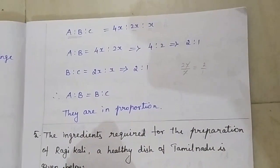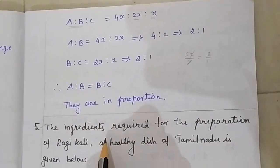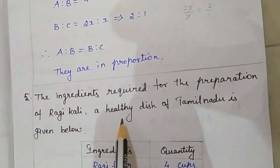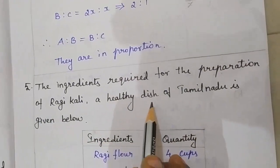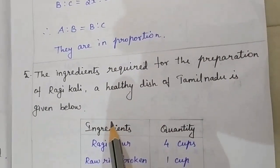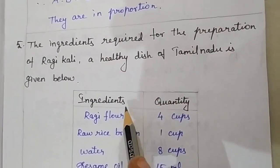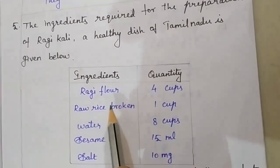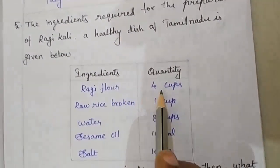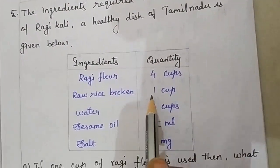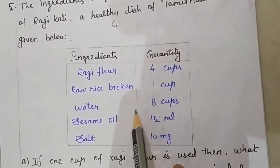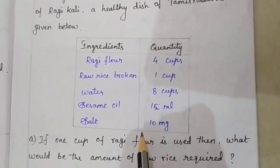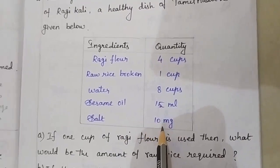Next, fifth sum. The ingredients required for the preparation of ragi kali, a healthy dish of Tamil Nadu, are given below. The ingredients and quantities are: ragi flour 4 cups, raw rice broken 1 cup, water 8 cups, sesame oil 15 ml, and salt 10 mg.